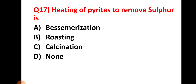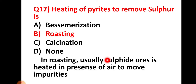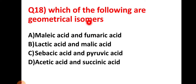Question number seventeen: heating of pyrites to remove sulfur is called — this process is called roasting. In roasting, sulfide ore is heated in the presence of air to remove impurities. Ores are substances from which we can extract metal easily and conveniently. So roasting is the right answer.